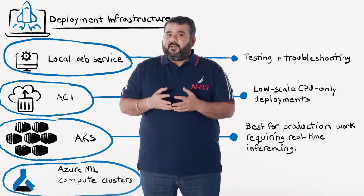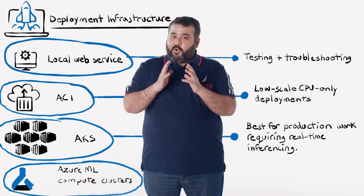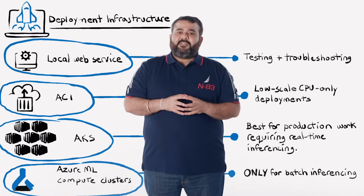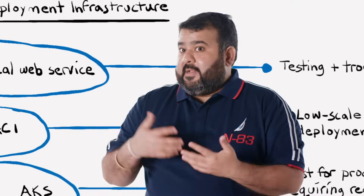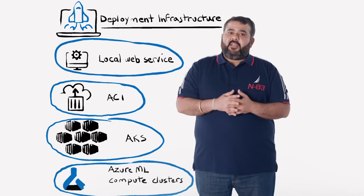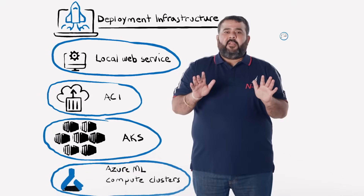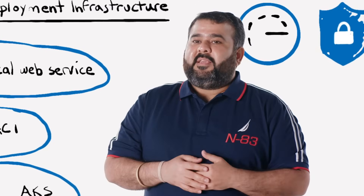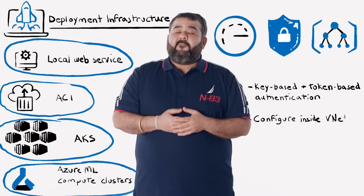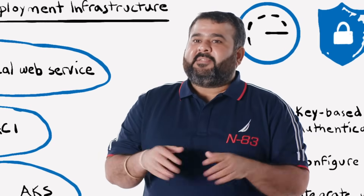The fourth is Azure Machine Learning Compute Clusters — the same clusters discussed in the model training video. These can also be used to deploy models, but only for batch inferencing needs, supporting both CPU and GPU-based deployments with an option for low-priority VMs. All production-ready compute environments, like Azure Kubernetes Service and Azure Machine Learning Compute Clusters, come with enterprise-grade monitoring, security, and governance. They support both key-based and token-based authentication for secure inferencing requests, can be configured inside VNets, and integrate with Azure App Insights for granular information about what's happening inside these environments.